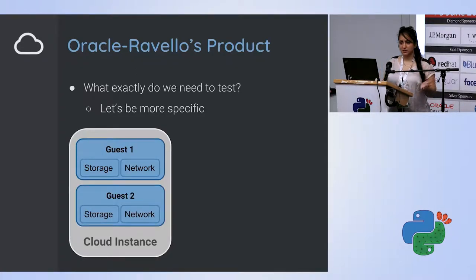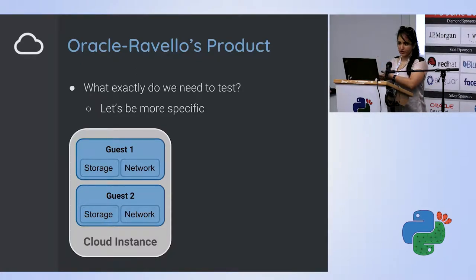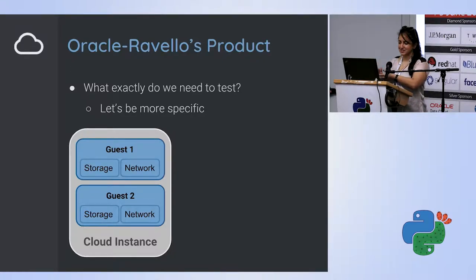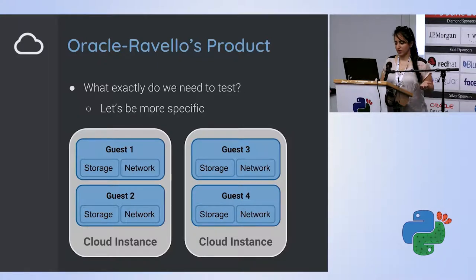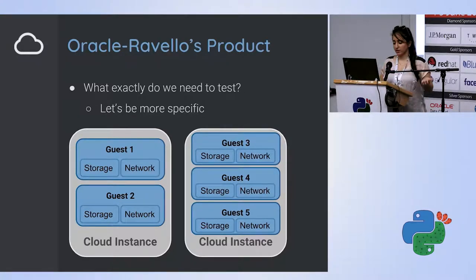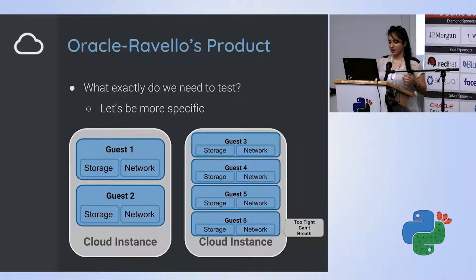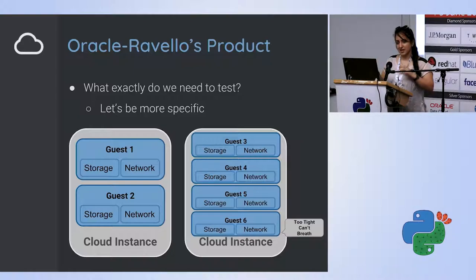We might have one guest, or more than one. Sometimes we can run the whole network on top of more than one instance. We could have 100 guests and then we wouldn't run it on just one cloud instance. So in this customer's app, we might have more than one cloud instance — one could have four guests, another two, another three, or another four, depending on the requirements.